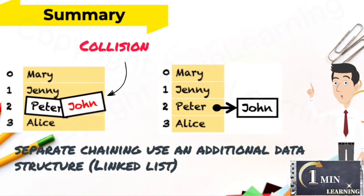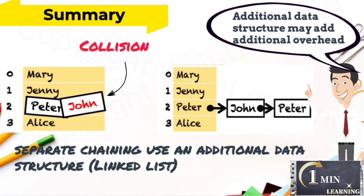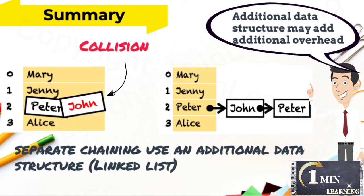Summary. Separate chaining uses an additional data structure linked list. Additional data structure may add additional overhead in separate chaining.